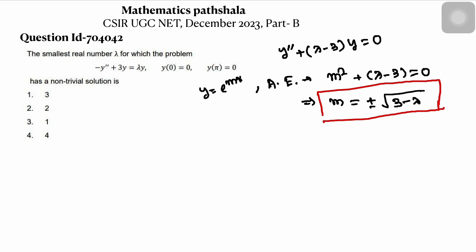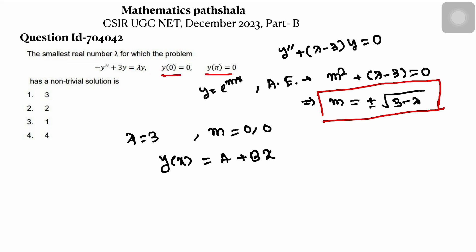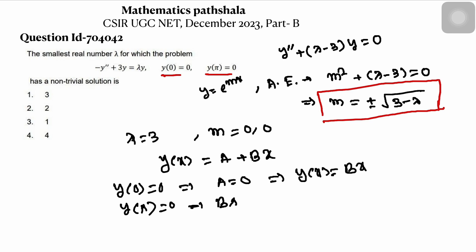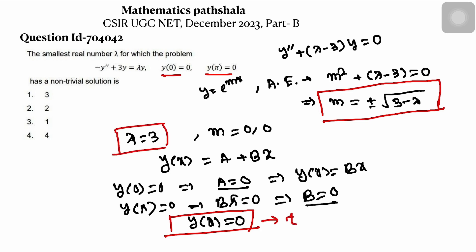Let lambda = 3. So m will become 0, 0. The solution can be written as y(x) = a + bx, where a and b are arbitrary constants. Now, the boundary conditions give y(0) = 0 and y(π) = 0. y(0) = 0 gives a = 0, so the solution becomes y(x) = bx. Then y(π) = 0 gives b = 0, since π ≠ 0. So we get a = 0 and b = 0, making y(x) = 0. When lambda = 3 we get the trivial solution.